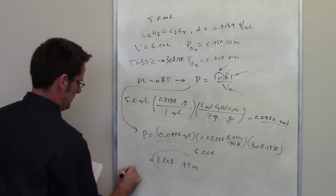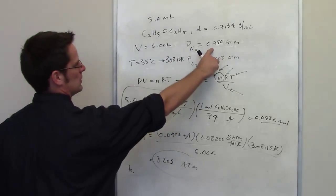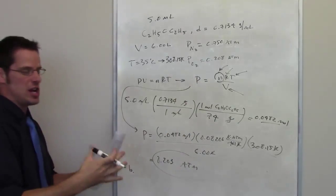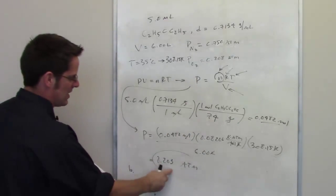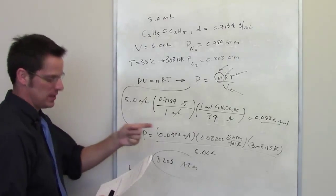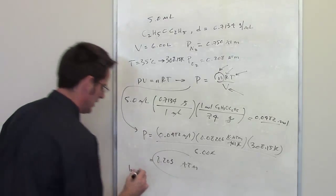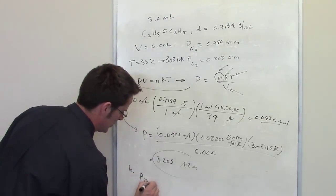In part B of this question it tells us the partial pressures of nitrogen and oxygen in the chamber already. We've now added to that 0.203 atmospheres of pressure from the diethyl ether. It asks us to calculate the total pressure in the whole system.